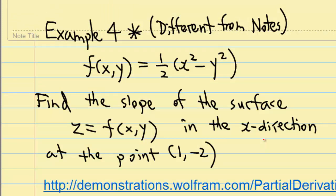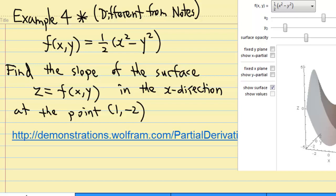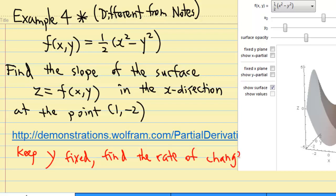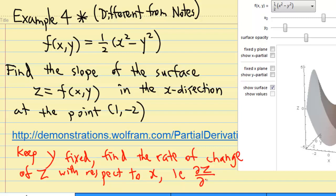What does it mean by the slope of the surface in the x direction? That means a point on the surface at y equal to negative 2 must move along the x direction. Then you can find out the rate of change, which gives you the slope of the surface. This means we want to keep y fixed and find the rate of change of z when x changes — that is, the partial differentiation of z with respect to x.